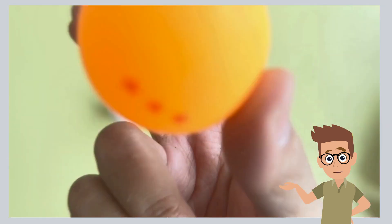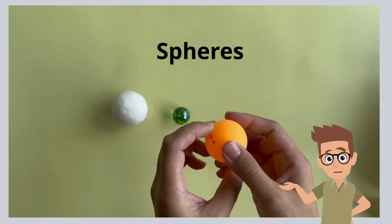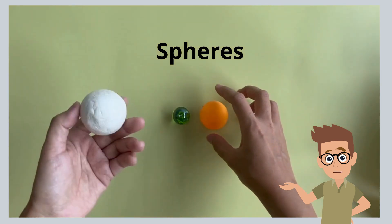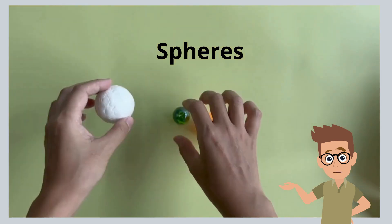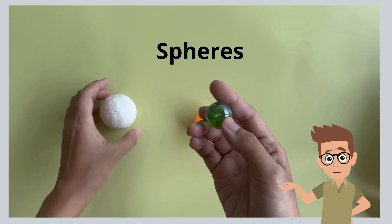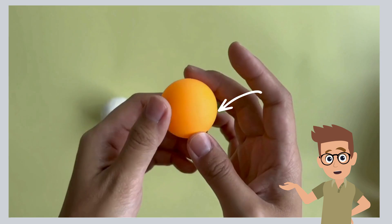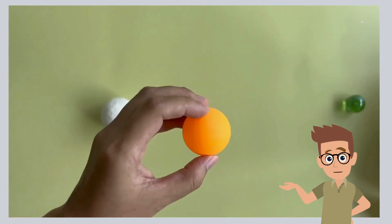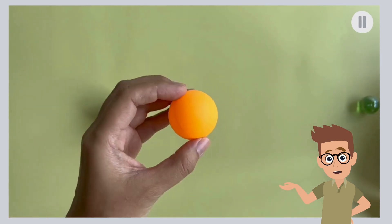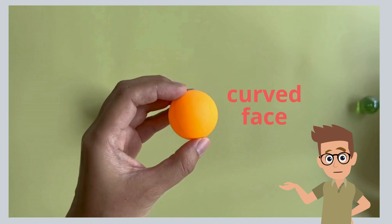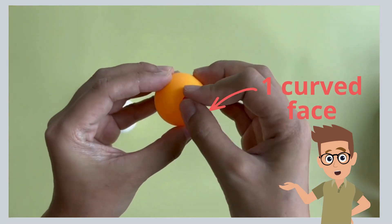Now, let's look at the last group of solids, called spheres. We have a ping pong ball, a styrofoam ball, and a marble. Is this face of the sphere a flat or curved face? Pause and discuss with your friends. It is a curved face. A sphere has only one curved face.